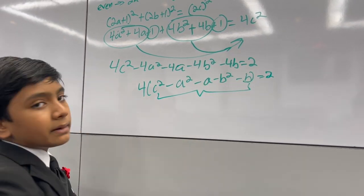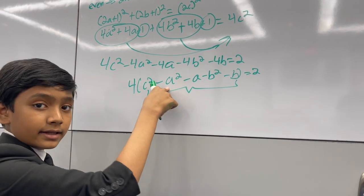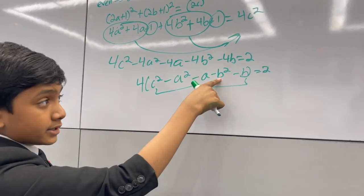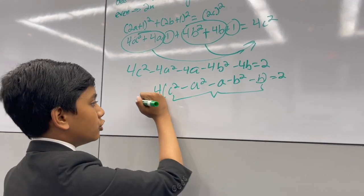Now, this has to be an integer because everything in it is an integer: c squared is an integer, a squared is an integer, a is an integer, b squared is an integer, and b is an integer. But look what happens when we divide both sides by 2.